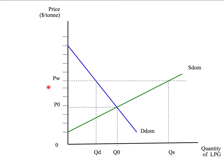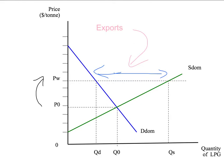We will have exports if the world price is above the domestic price. In that situation, given the world price Pw, domestic producers will sell QS, domestic consumers will buy QD, and the difference between domestic supply and domestic demand is simply given by the level of exports. Because domestic consumers face a higher price and buy less, they're worse off by opening the market to international trade. But domestic producers get a higher price and sell more — they're better off.